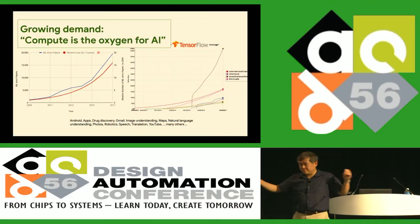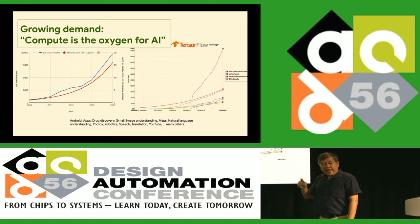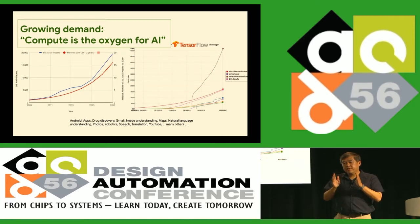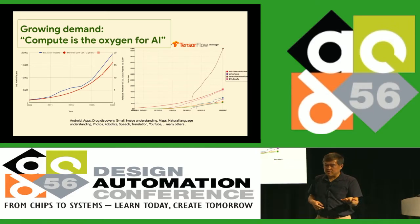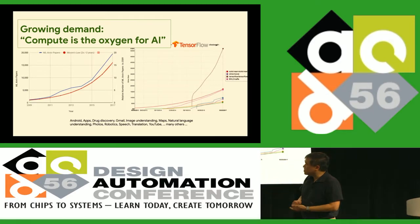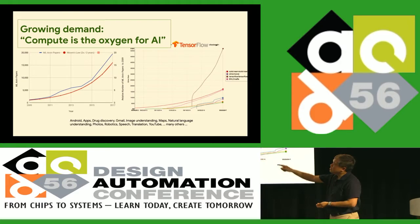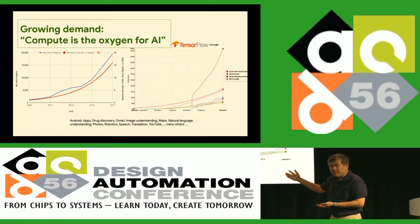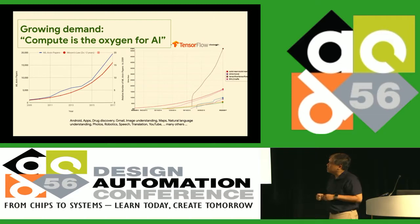I've given you a huge number of examples to show how big this problem is. What I'm trying to say is that AI is going to be everywhere — in places where you see it and in places behind the scenes. What powers AI is the compute on the cloud as well as on the edge. The number of ML papers published is basically on a Moore's Law curve — doubling every two years — and we have to be able to address that.